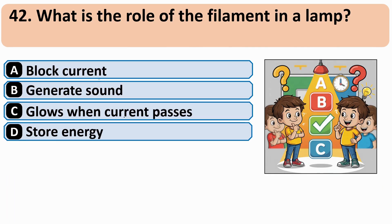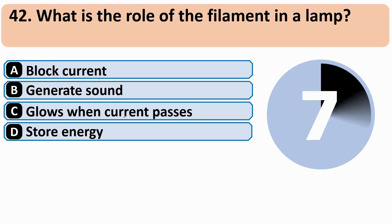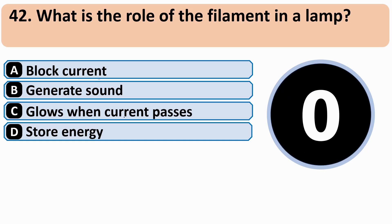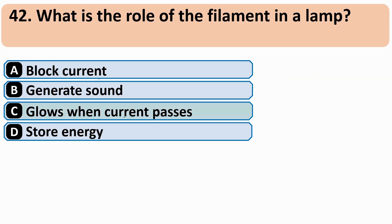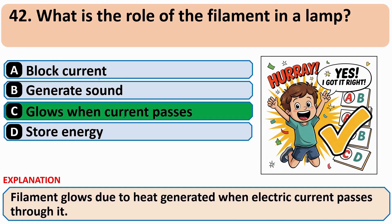What is the role of the filament in a lamp? The correct answer is C: Glow when current passes.